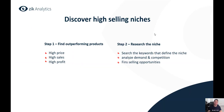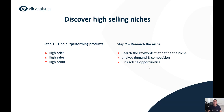Now we move to the last part: discovering high-selling niches using the competitor research tool. Step one — find outperforming products in your competitor's store: products with high sales, high price, or high profit. High sales here means not just five in the last 30 days, but 20, 30 or more — that's a sign there's a niche with a lot of demand behind it. Step two — research the niche: look at the product title, search the keywords that define the niche, run a search on Zeek's product research tool, analyze demand and competition, then find selling opportunities.